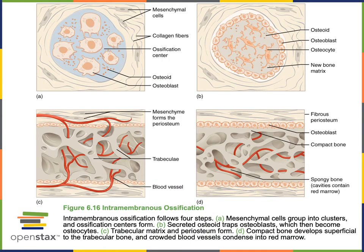The process of ossification is the production of bone from another tissue, so osseous tissue is a replacement tissue that's formed from a pre-existing tissue.